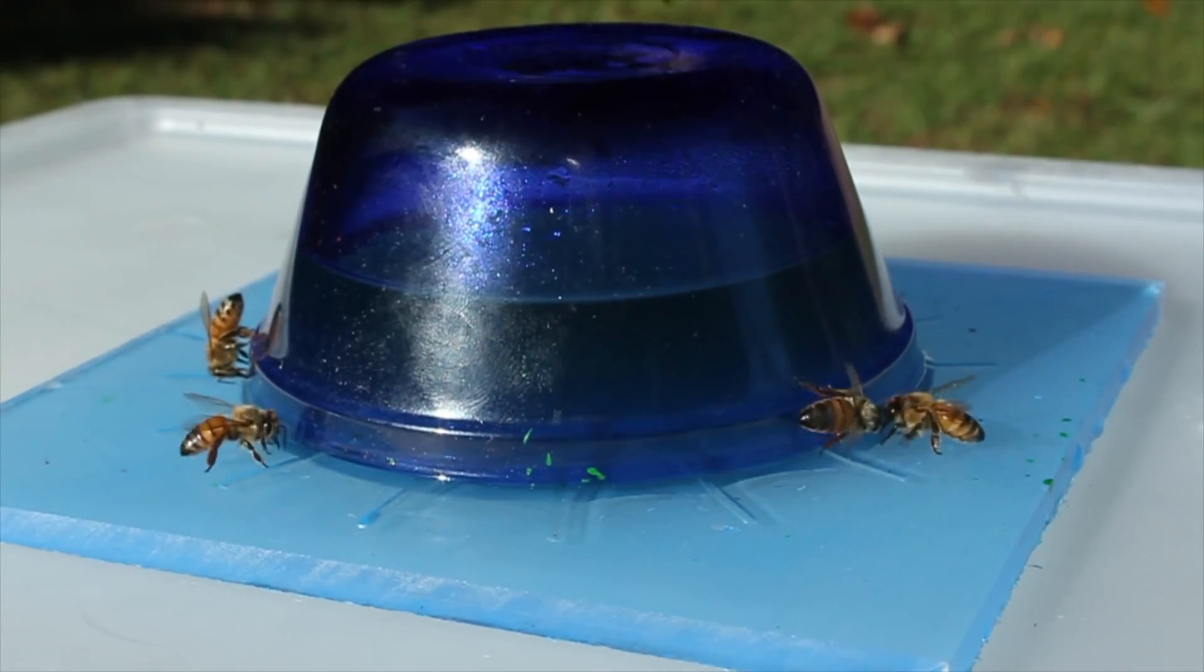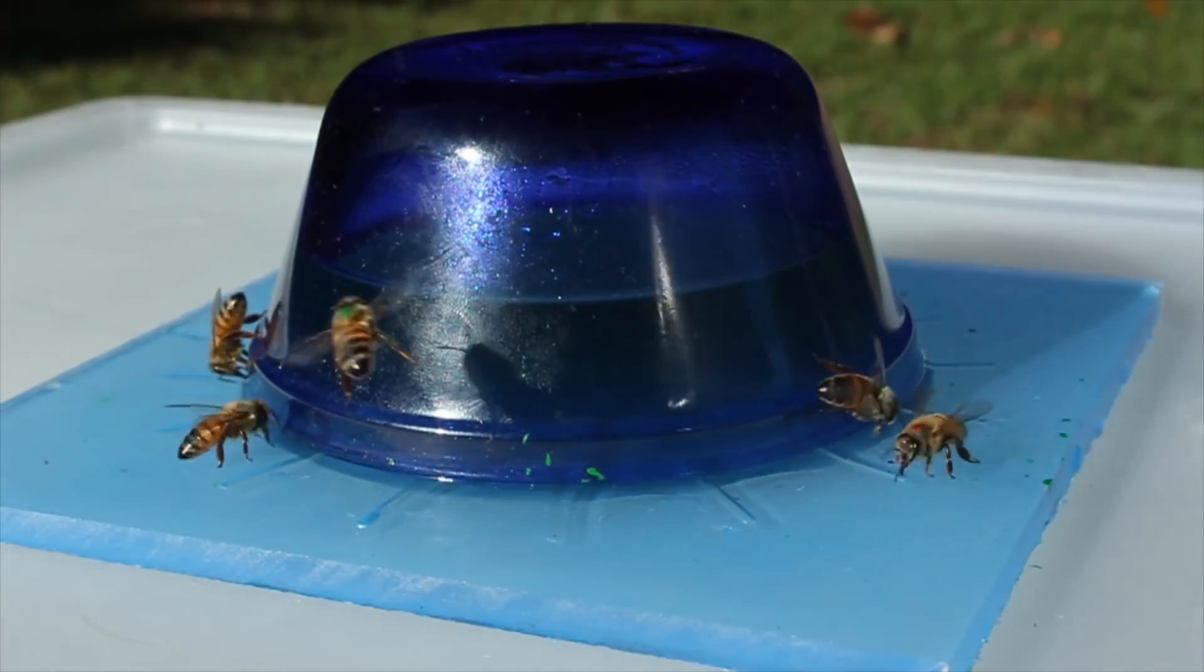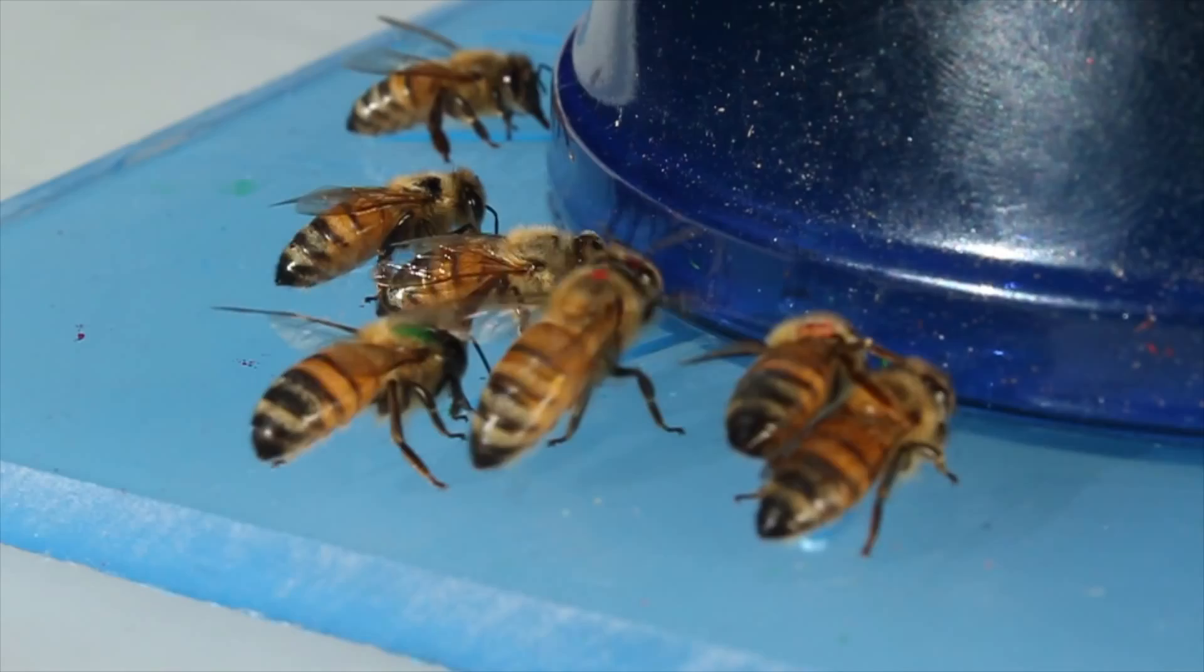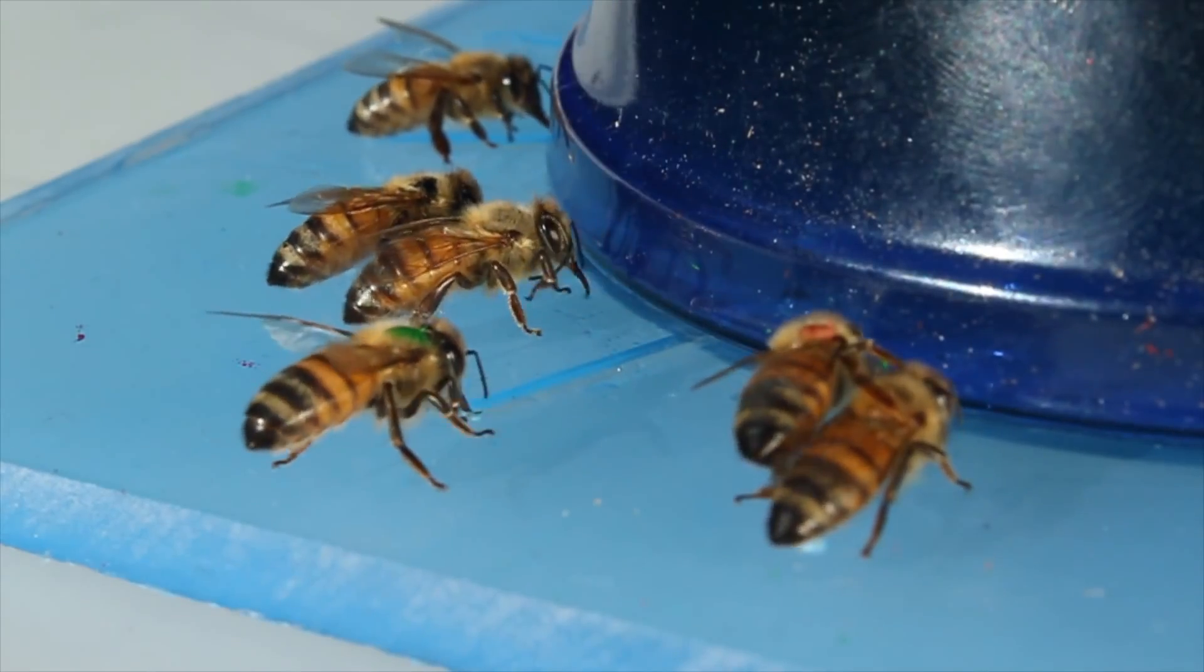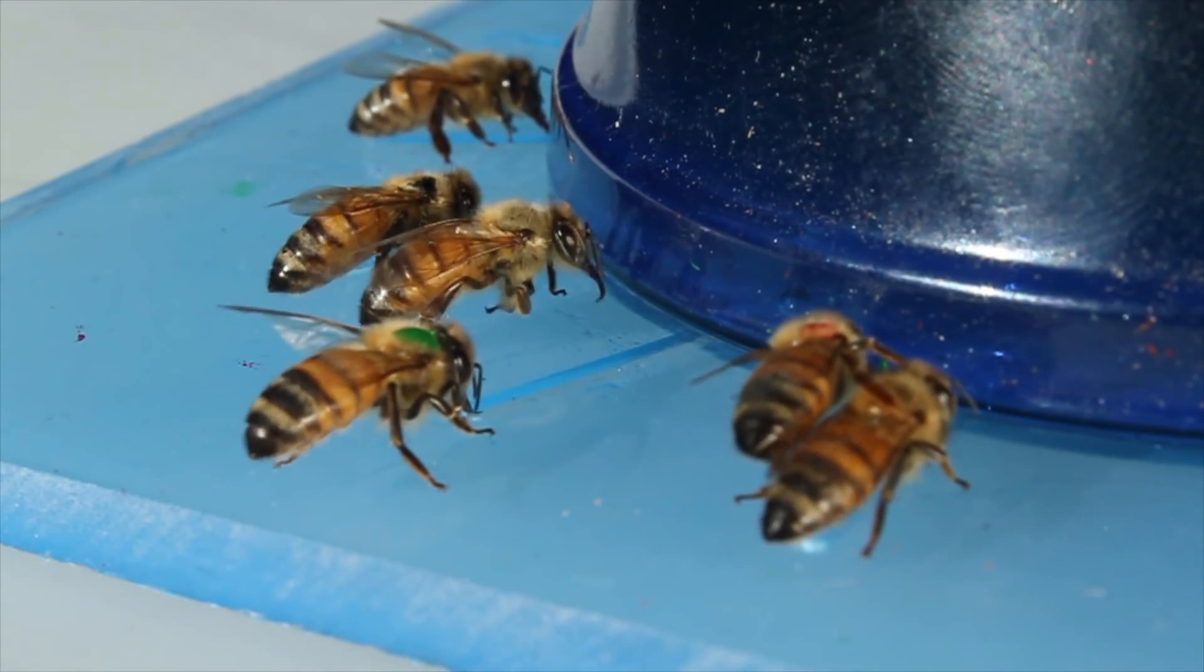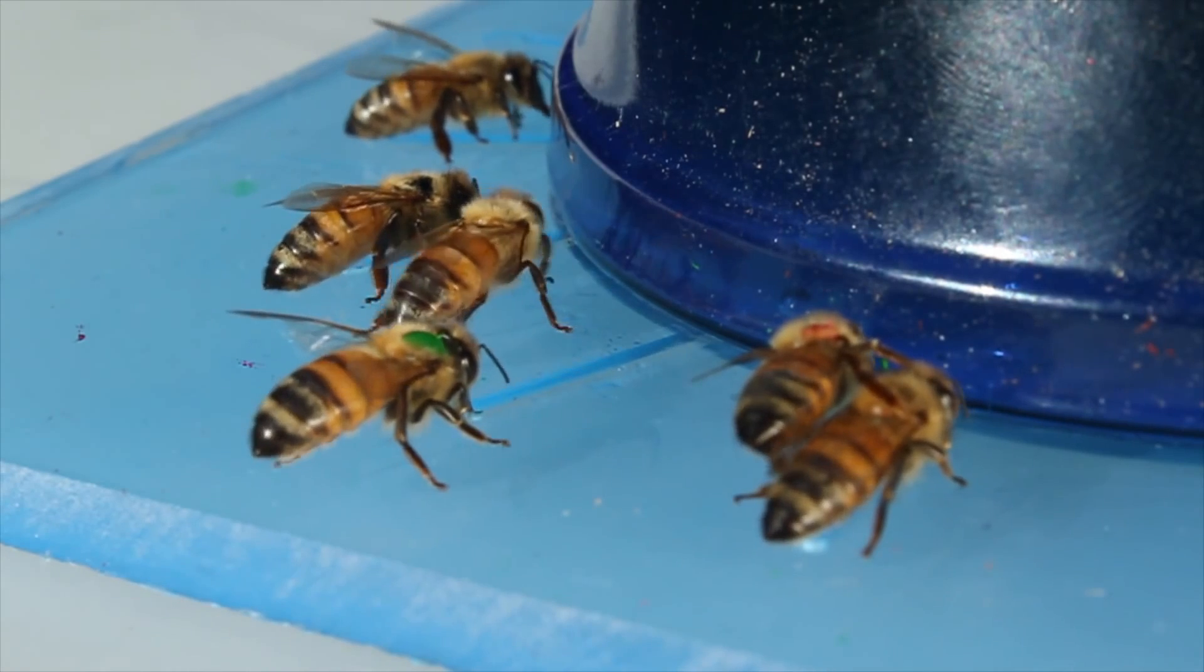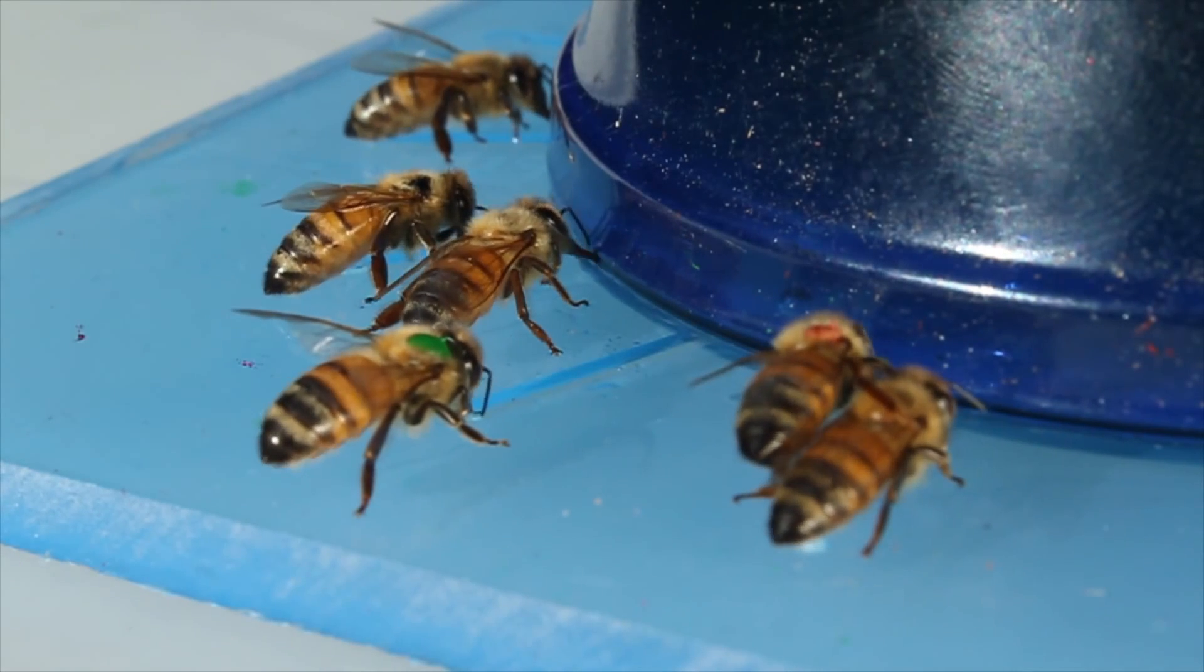They don't travel as a group. Instead, each bee finds the food source individually. How could these bees, who held no previous knowledge of this site, suddenly know precisely where the feeder was located? Is it possible that the animals communicate amongst themselves?